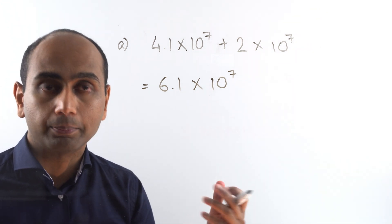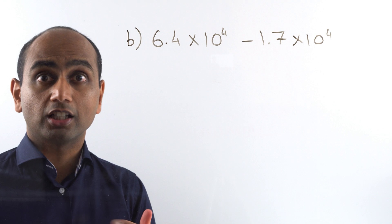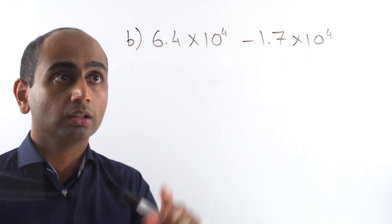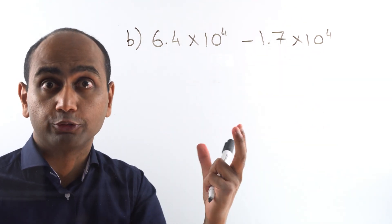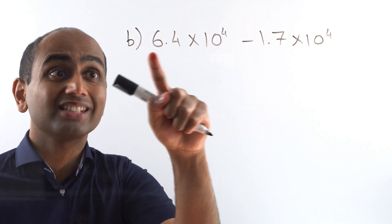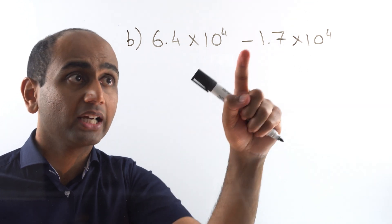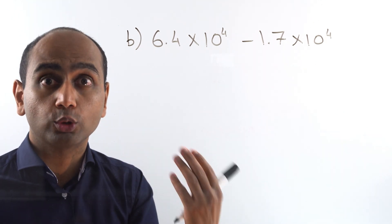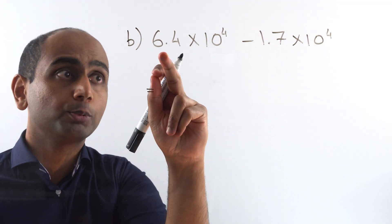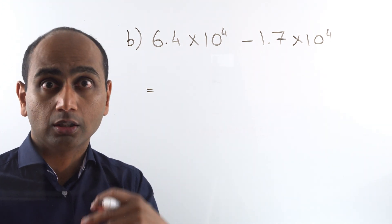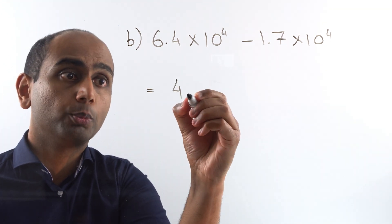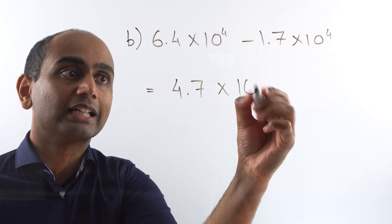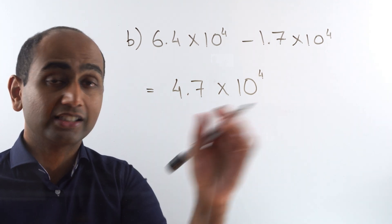Adding numbers in standard form is quite straightforward when you've got the same power of 10. Let's move on to question B. This time I am subtracting rather than adding but the same principle applies. I've got the same power of 10 — 10 to the power of 4 — so I've got 6.4 lots of that minus 1.7 lots of that. 6.4 minus 1.7 works out to be 4.7, so the answer is 4.7 times 10 to the power of 4.